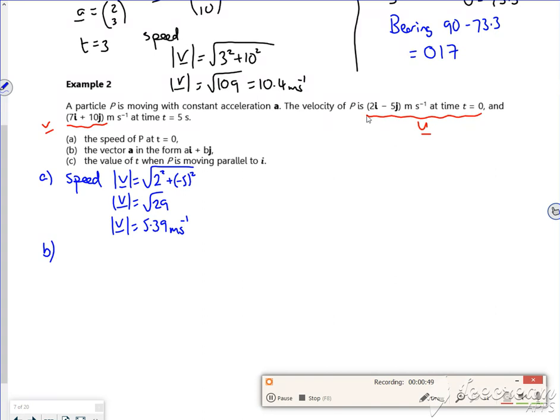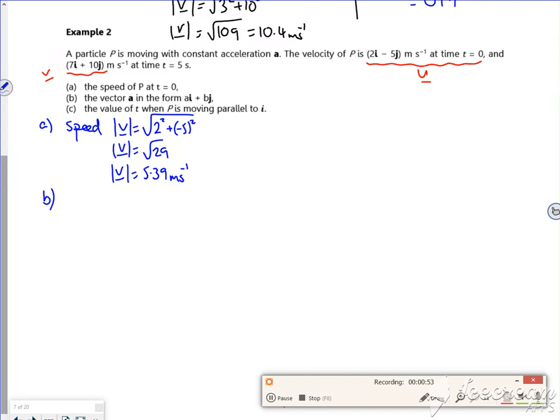Part B says, the vector for the acceleration. Right, so what are we doing? So u is my 2, minus 5, v is 7 and 10, a is what I want, and t is 5.